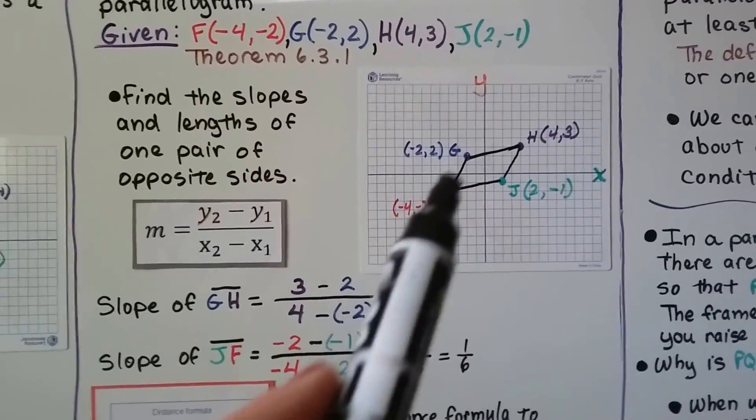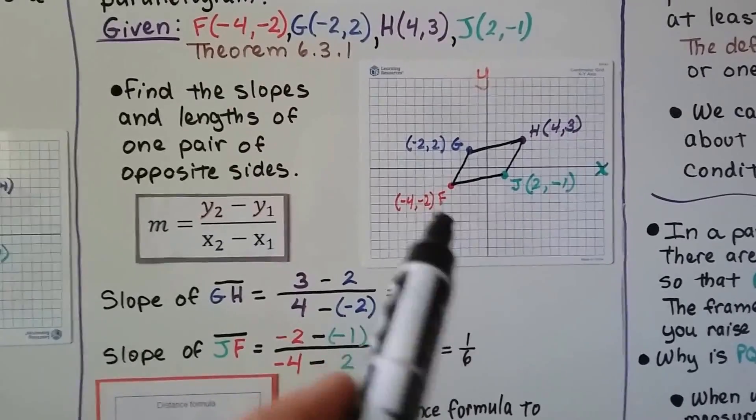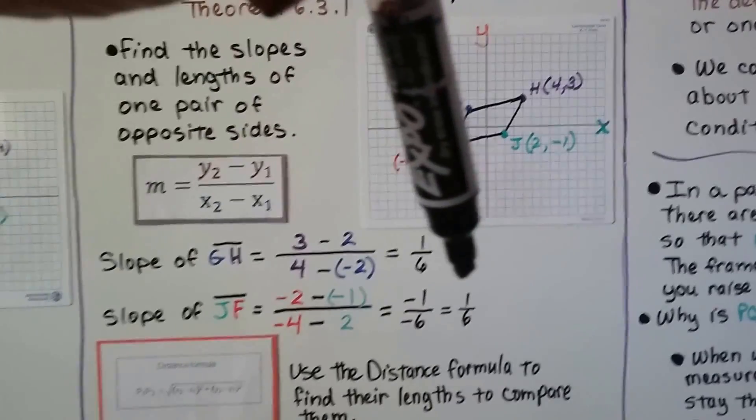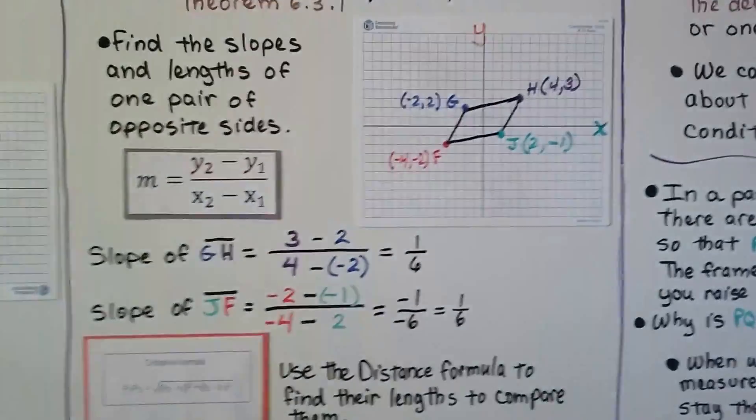So we find the slopes and lengths of the pair of opposite sides. We use the slope formula for GH, this one, and we're going to compare it to JF, this one. And for GH, we get a 1/6, and for segment JF, we get a 1/6. So we know these two are parallel. They have the same slope.